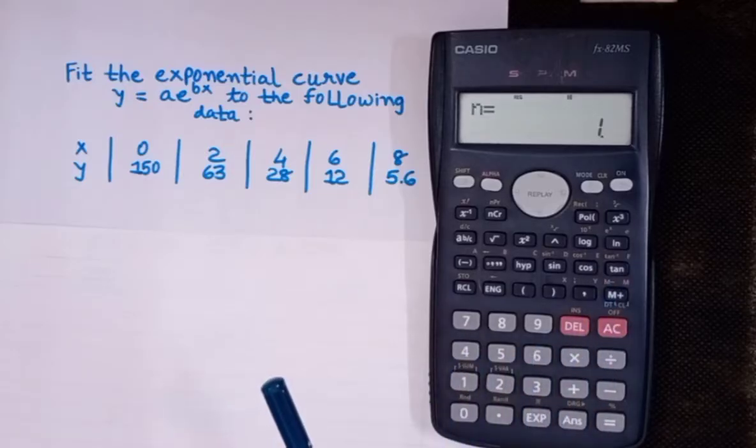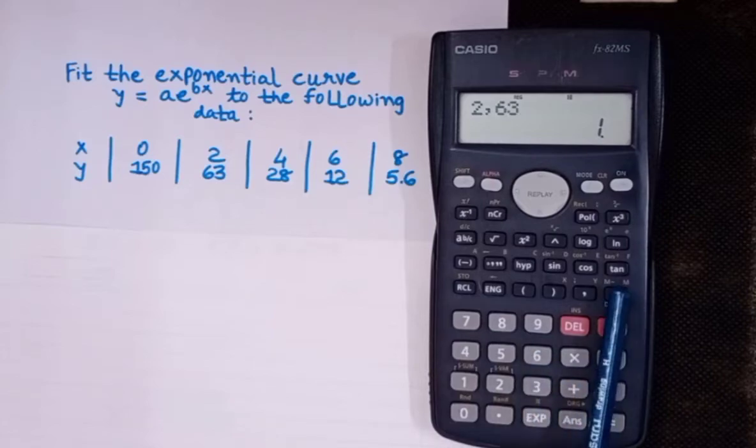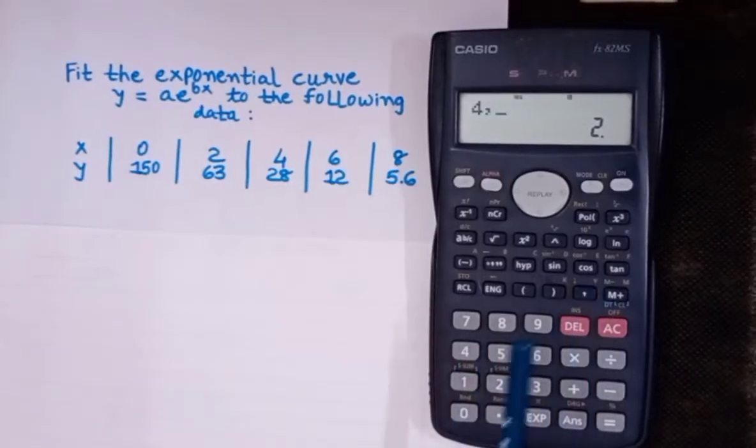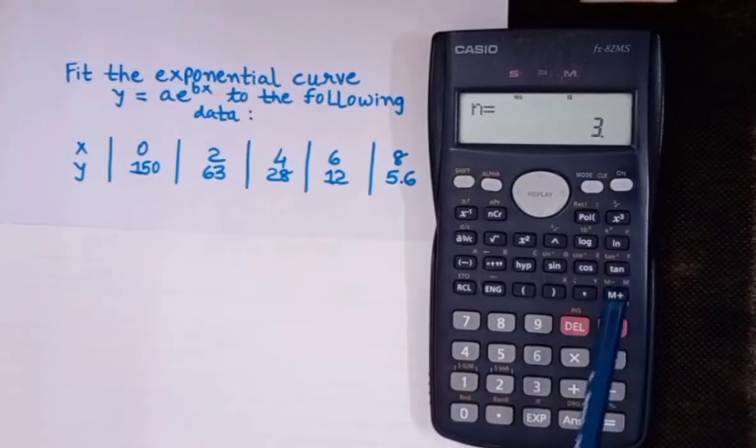The second value of x is 2 and that of y is 63, so press 2 comma 63, again press M plus. Then the third value of x is 4 and y is 28, so 4 comma 28, then press M plus.